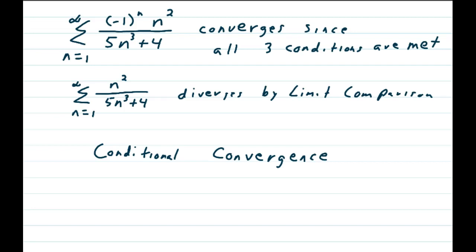So, now we have that the alternating series, negative 1 to the nth, n squared over 5n cubed plus 4, converges since all three conditions were met. We discovered before that the positive series diverged by the limit comparison test, so this series has conditional convergence.